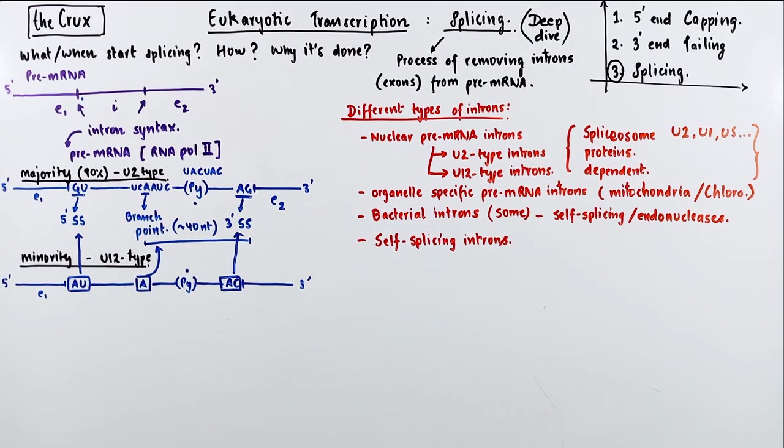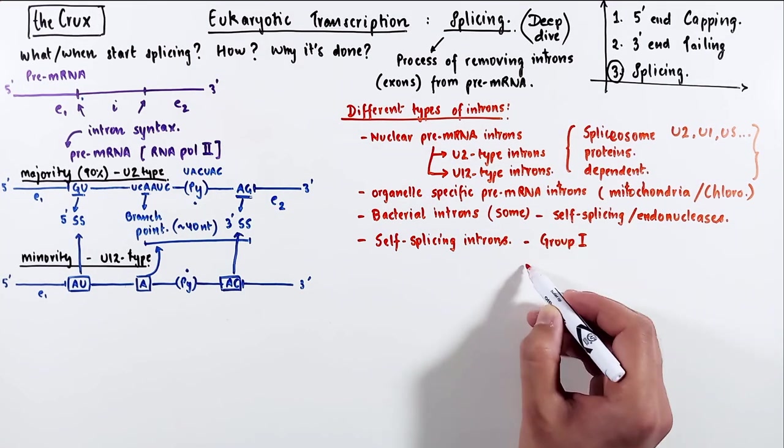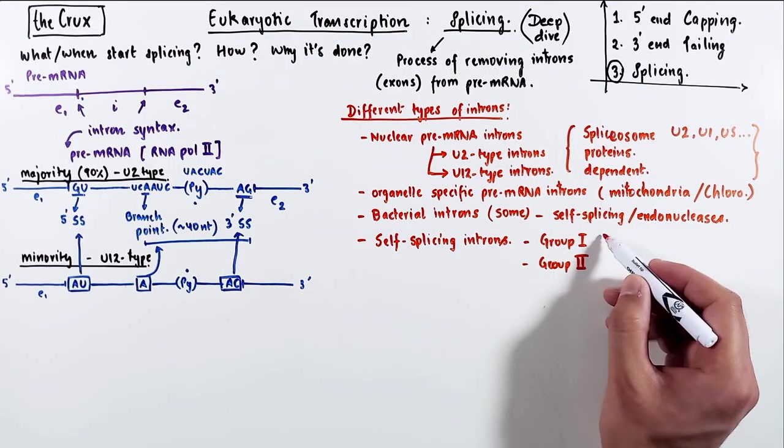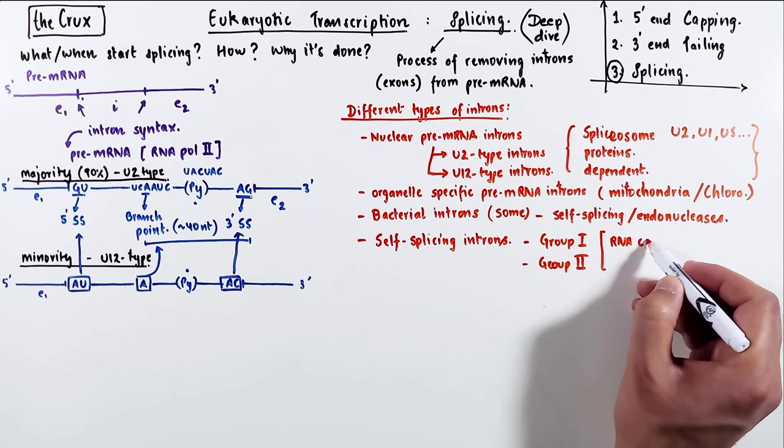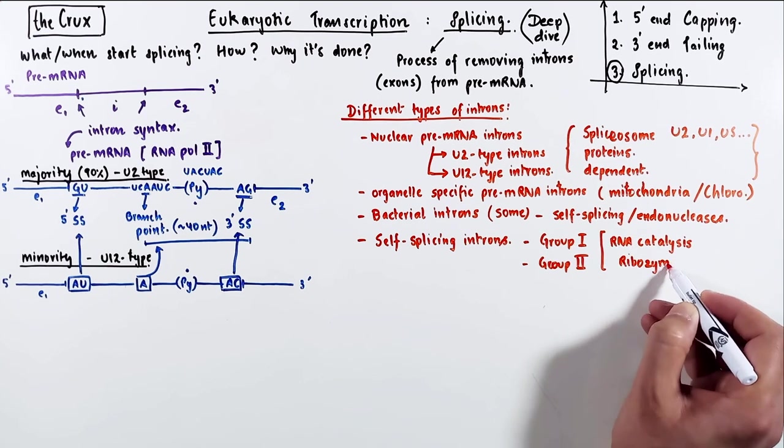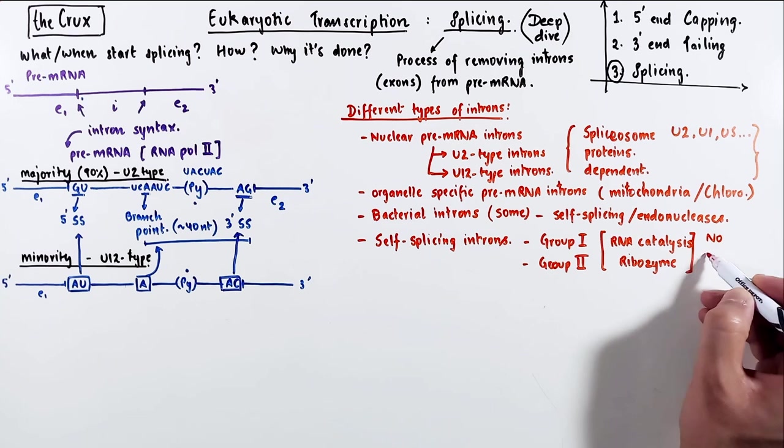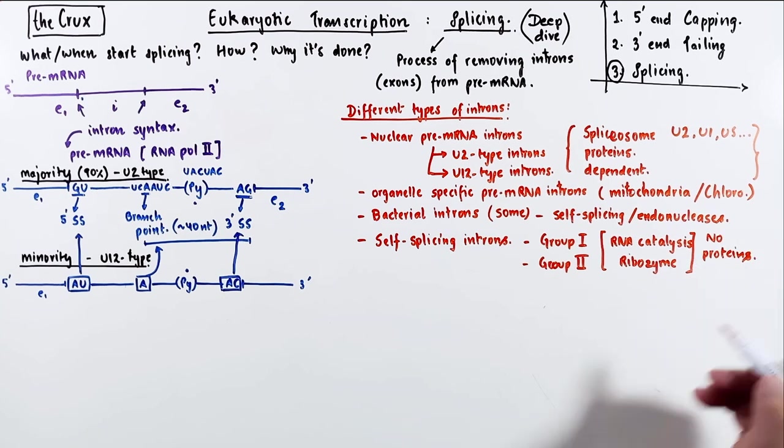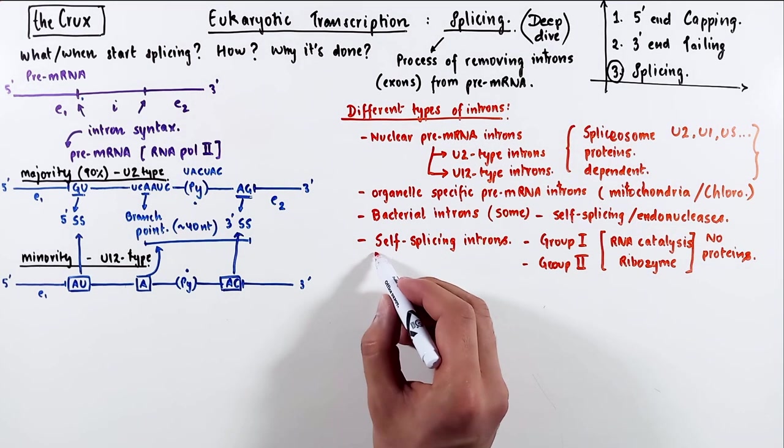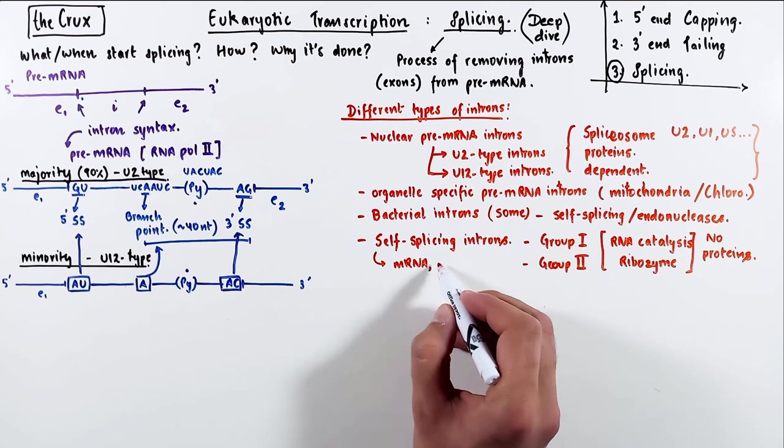In eukaryotes, there are two types of self-splicing introns, group 1 and group 2. Self-splicing suggests that they are self-catalyzing, meaning that they are perfect examples of RNA enzymes or ribozymes, which suggests that they don't need any protein or enzymes to remove them. They take care of themselves.